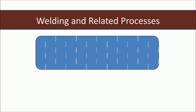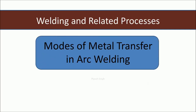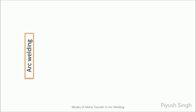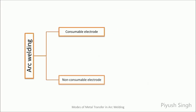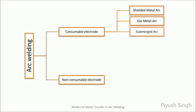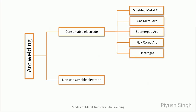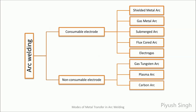Hi, my name is Pierce Singh and I welcome you to this video on modes of metal transfer in electric arc welding. The arc welding processes can be classified into two types based on the electrode that is used in the process: consumable electrode welding and non-consumable electrode welding processes.